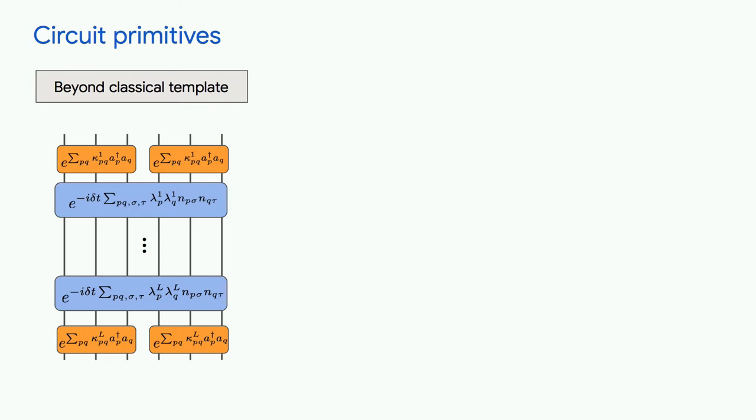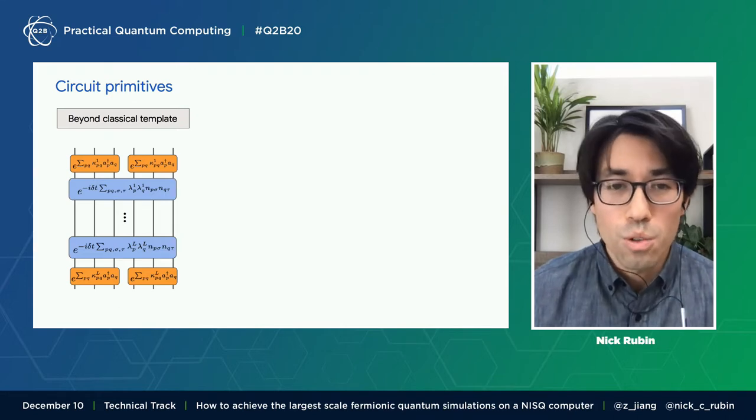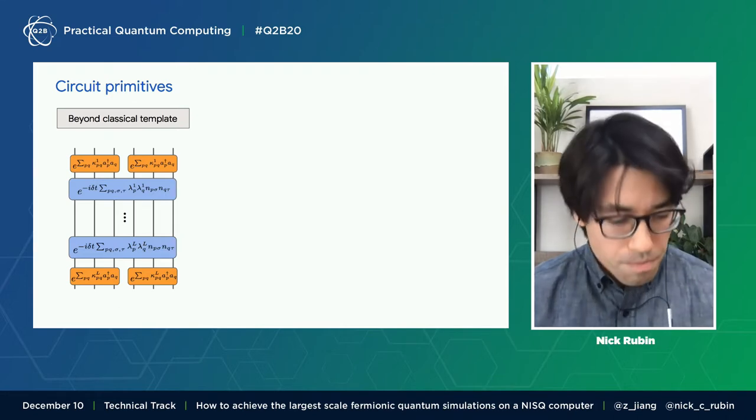So this is a very general template. If you actually look at the blue box on the slide, that general construction is actually the QAOA cost Hamiltonian. And so the things that we learn in the context of chemistry and physics simulation will usually transfer over to other fields.